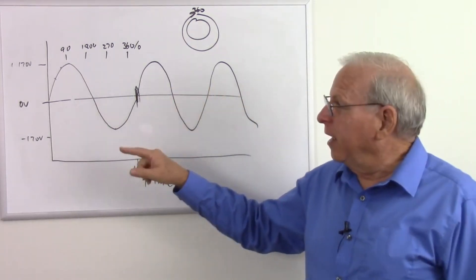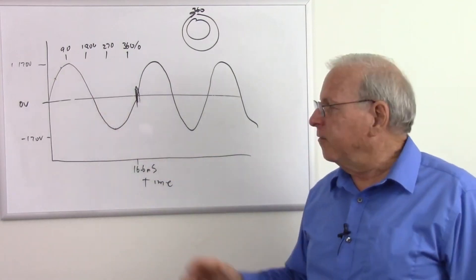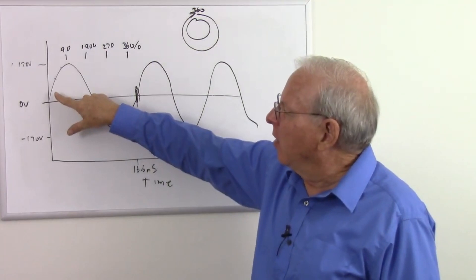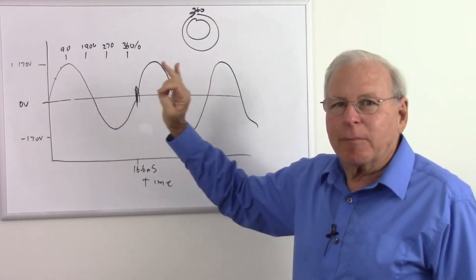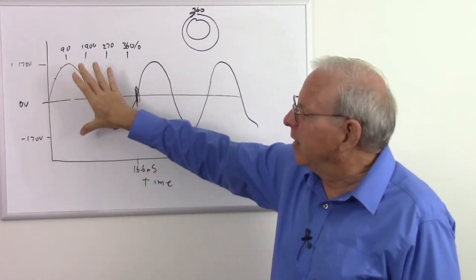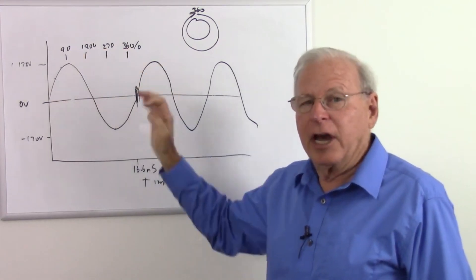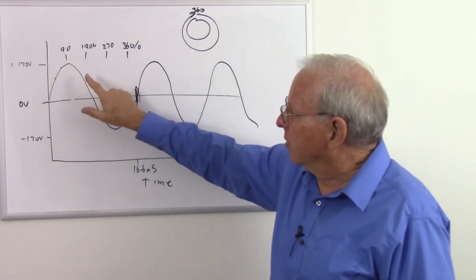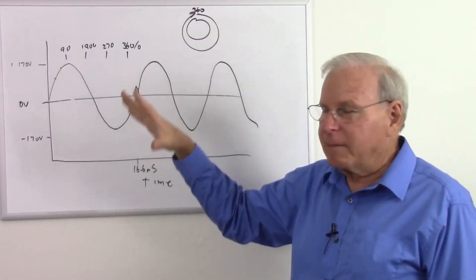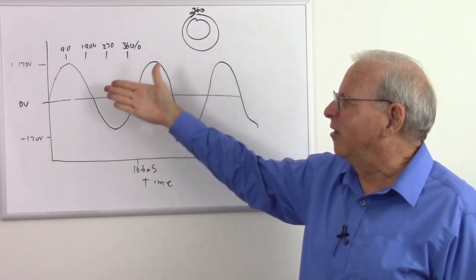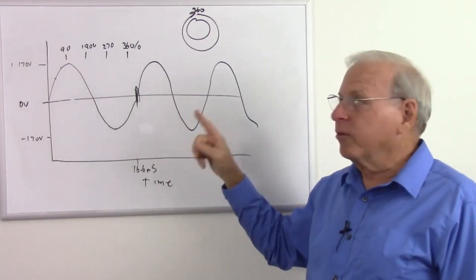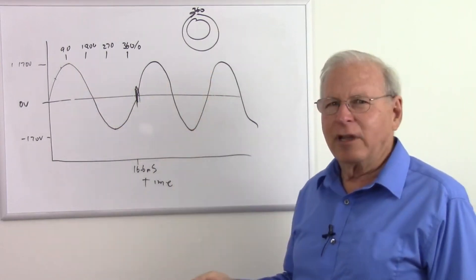Before moving on, one clarification: I said this goes up to 170 volts and down to minus 170 volts, but North American voltage is rated as 120 volts. That's because if we take all the voltages over time and apply a mathematical operation called root-mean-square (RMS), we find this wave carries the same energy as approximately 120 volts DC. So even though the peak is 170 volts, we call it 120 volts because of the energy content. Put an oscilloscope on your wall plug and you'll see the 170-volt peaks; put a voltmeter on it and it reads 120 volts.